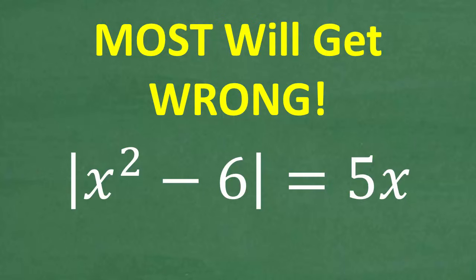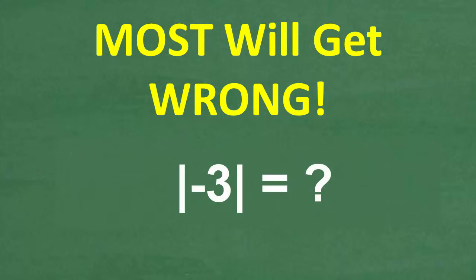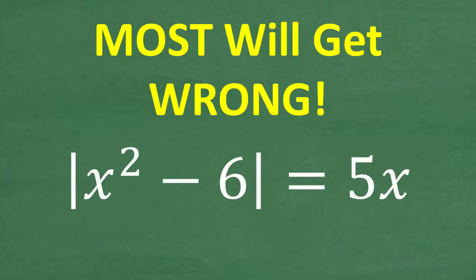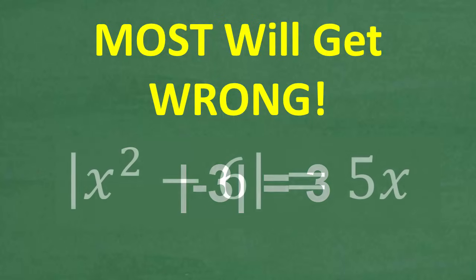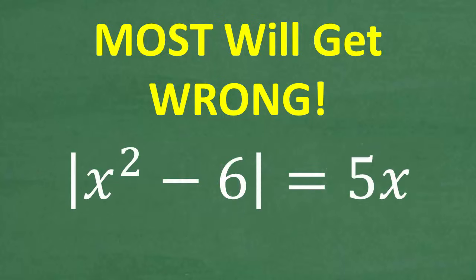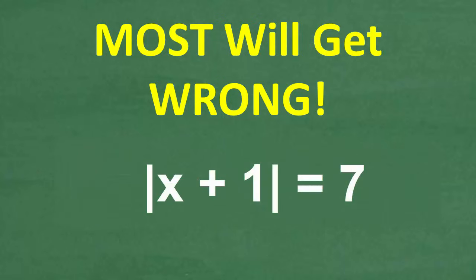We're talking about absolute value, so hopefully you know the answer to something like the absolute value of negative 3. The absolute value of negative 3 is positive 3, and the absolute value of positive 3 is also positive 3. Hopefully you have some experience solving equations like the absolute value of x plus 1 is equal to 7.